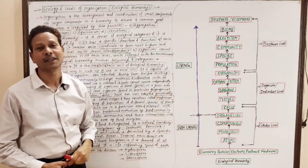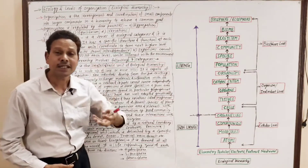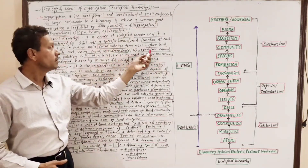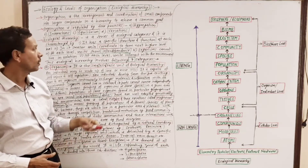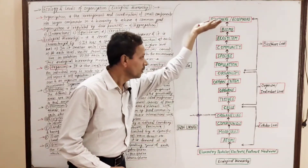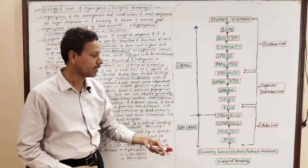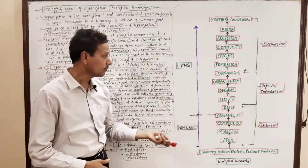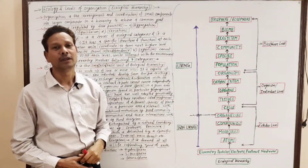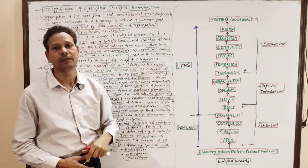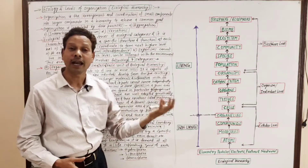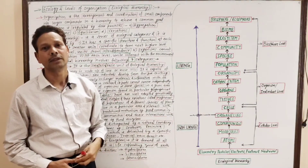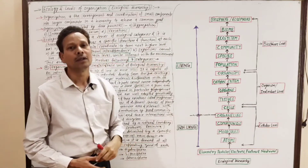Ecological Hierarchy means a series of arrangement of different ecological categories. It is characterized by different levels, where smaller units are arranged to produce larger units. At each level there is a specific structure and function. All units interact and coordinate with each other, and at each level, organisms coordinate and interact with the environment.